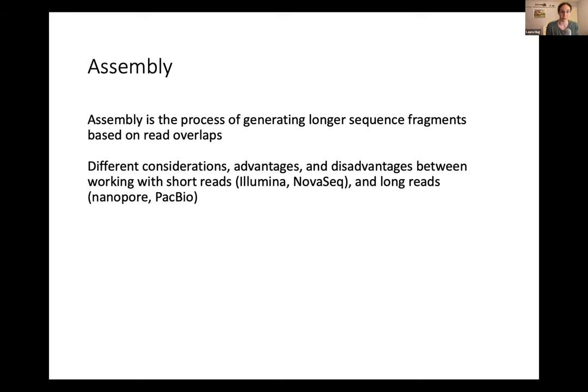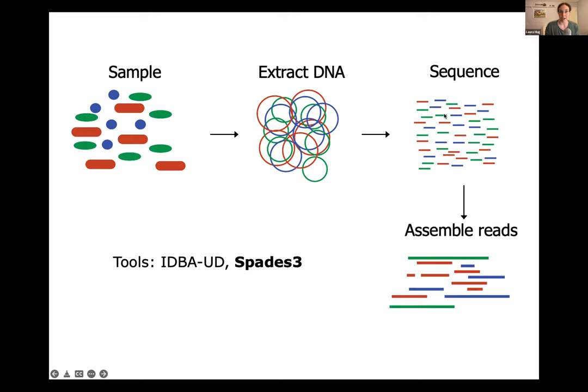First we're going to focus on short reads. Assembly is the process of identifying overlaps in sequence within these short reads. I'll highlight some tools that people typically use — if they're bolded, those are the tools used either in the workshop lab or to pre-process the data. IDBA-UD is a very common assembler. SPAdes 3 is also very popular and was what was used for the data in the workshop.